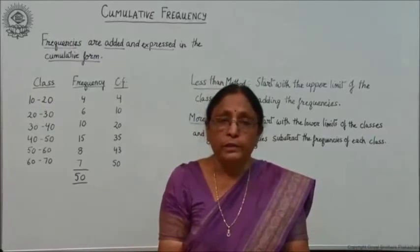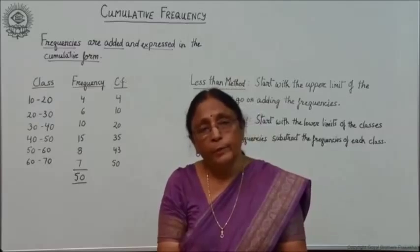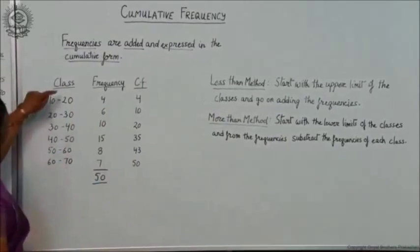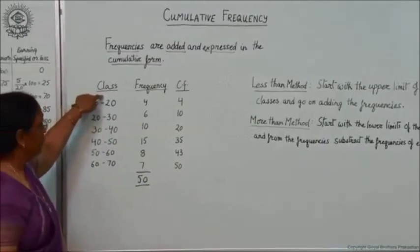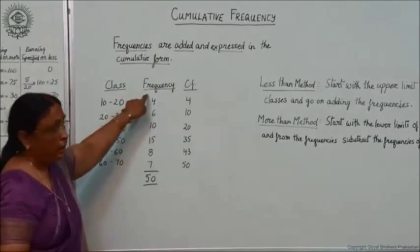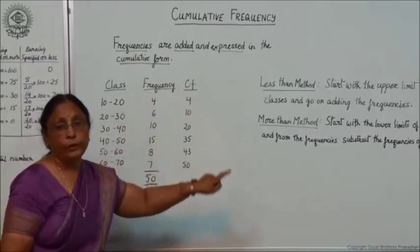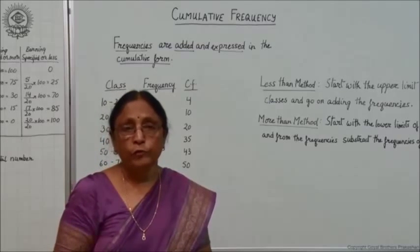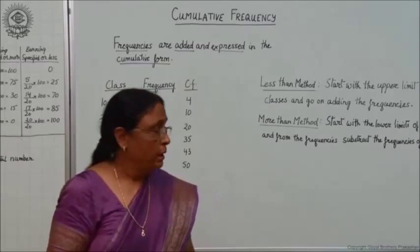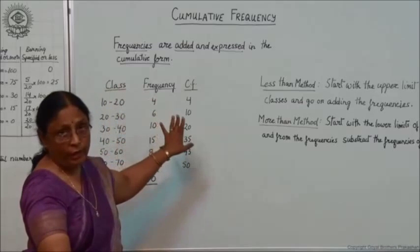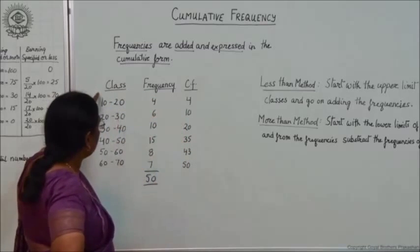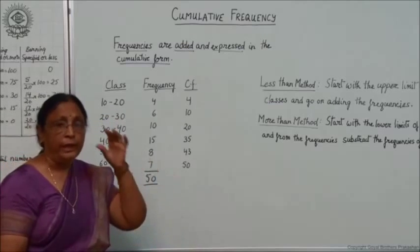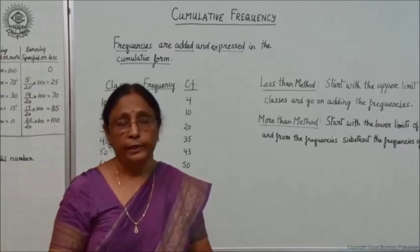Now let me give you an example. Here you can see the first column is the class interval, the second column is frequency, and the third column is cumulative frequency, which is denoted as CF. This is an imaginary dataset I have taken. The classes are 10 to 20, 20 to 30, and so on, with an equal class interval of 10.